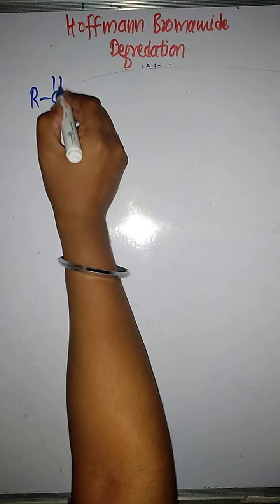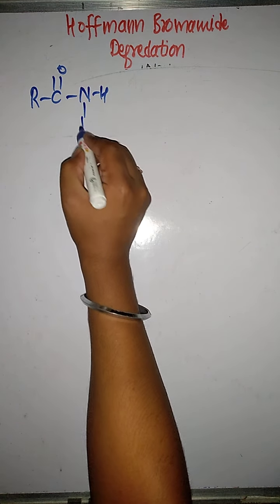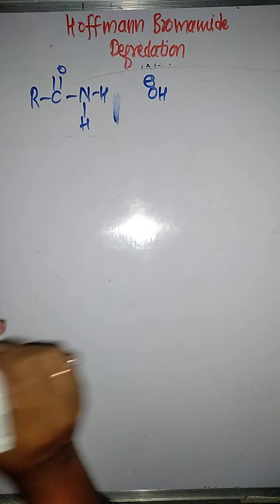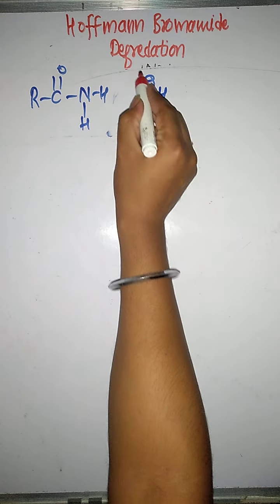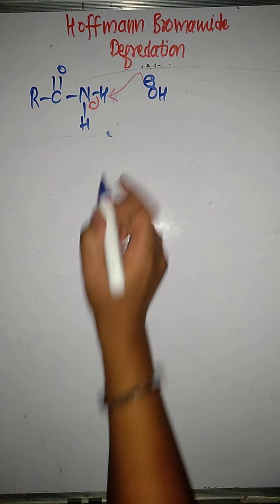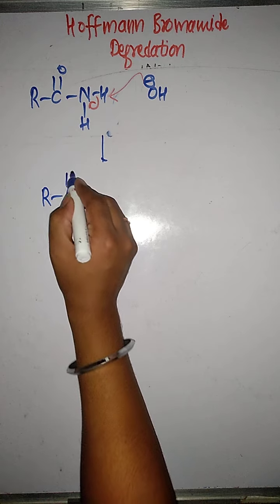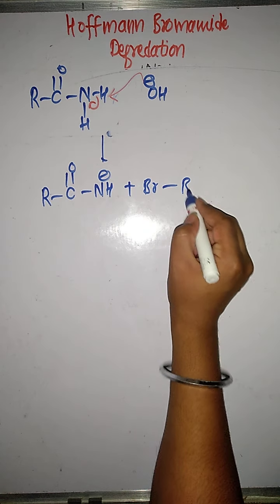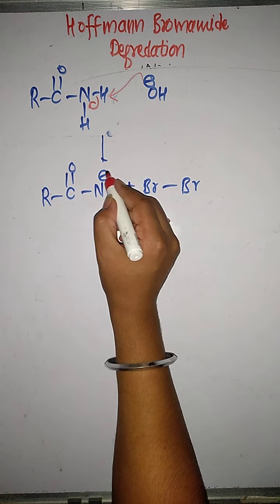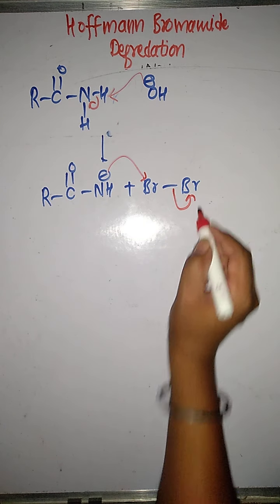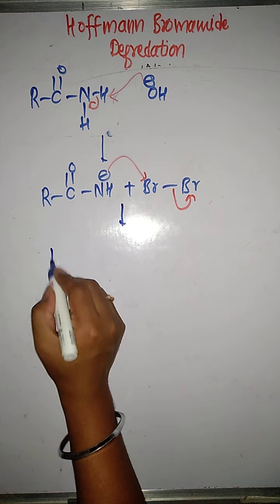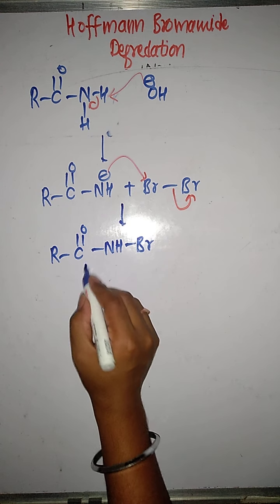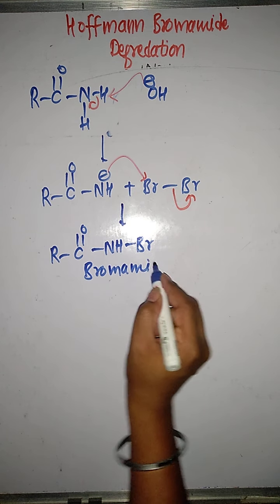First, we have the amide. The base OH⁻ from NaOH or KOH will abstract the acidic hydrogen from the amide nitrogen, forming R–C(=O)–NH⁻. Then bromine (Br₂) reacts: the N⁻ donates an electron pair to Br and bromine departs, giving R–C(=O)–NHBr. This intermediate is called bromamide.